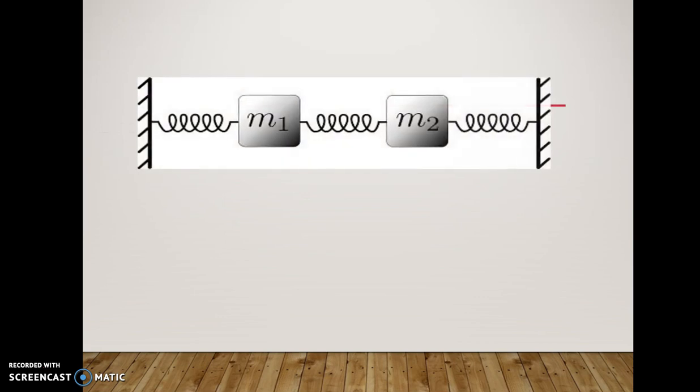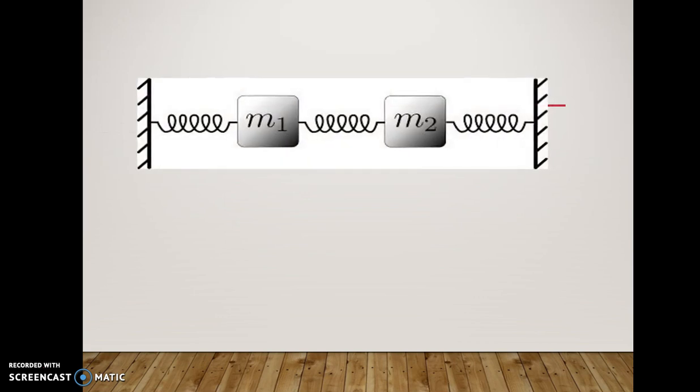First, consider two equal masses connected by a spring of constant K in the middle, and then connected to a wall either side by a spring of constant S. The spring constant of a spring is defined as the force needed to stretch or compress the spring, divided by the distance it moves.